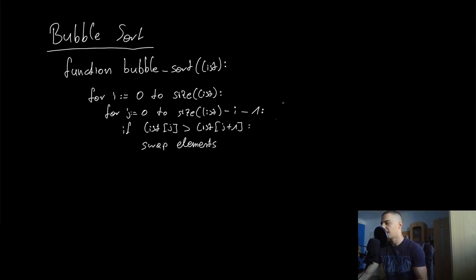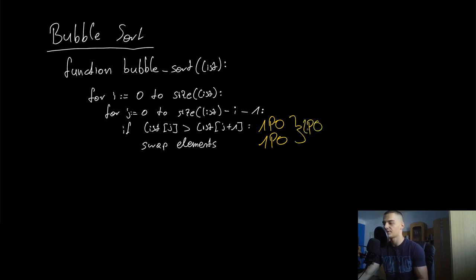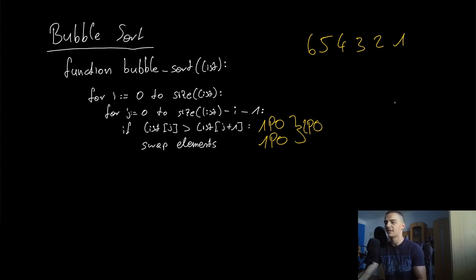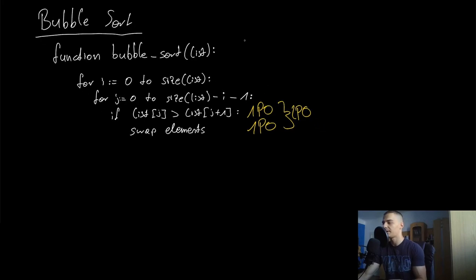Now let's use our mathematical skills to analyze this algorithm. Inside the loops we have one primitive operation for the comparison and one for the swap — two primitive operations total. For worst case runtime complexity, we assume we always enter the if statement and always swap. The worst case is a fully reverse-sorted list like [6, 5, 4, 3, 2, 1], where every comparison leads to a swap.